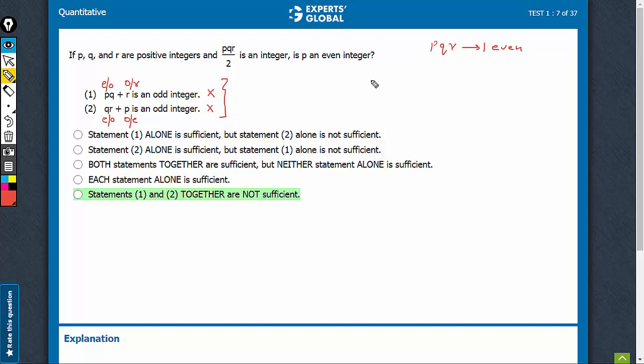Now let's combine and see. For the case where P is even and QR are both odd, we see that PQ would be even and R would be odd. Even plus odd would be odd. So this statement would be satisfied.